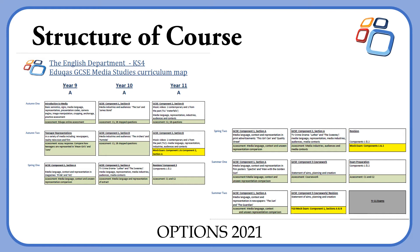After Christmas we start looking at our set texts. There are a lot of set texts, and this subject is all about giving you experience looking at a range of different media products. We start off looking at magazines, then move on to film and newspapers. In Year 10 we continue with radio and video games, and towards the end of that year you do your coursework. Year 11 is centred around revision in preparation for your exams at the end of the year.